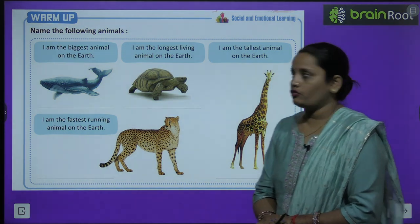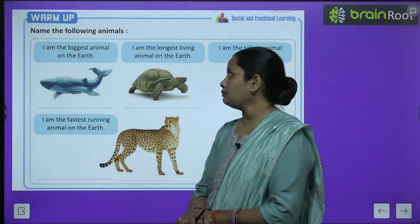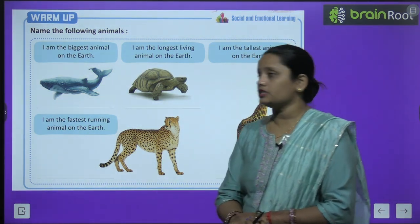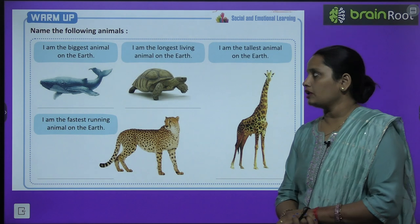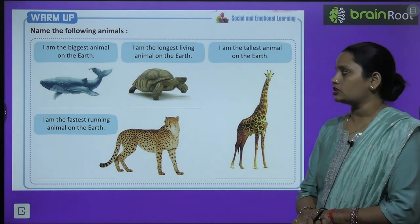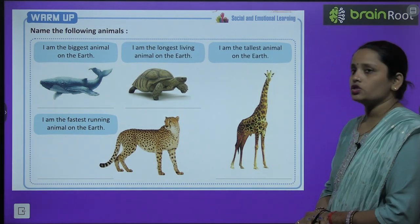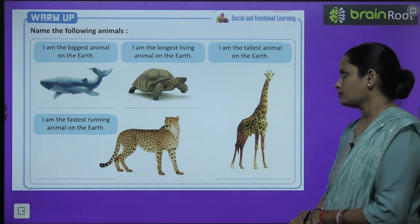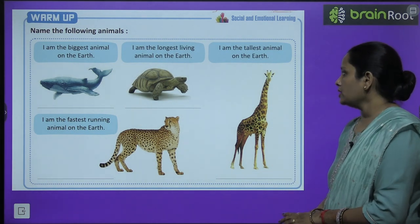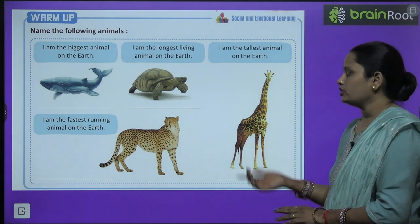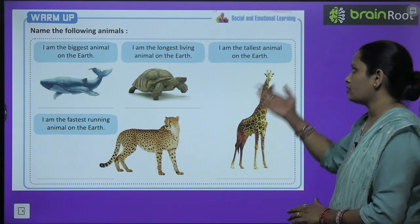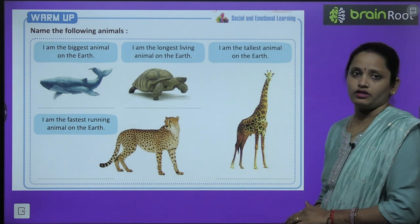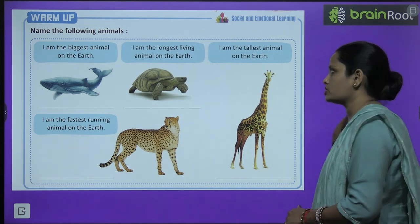Let's start with the warm up. Name the following animals. 'I am the biggest animal on the earth' — the answer is elephant. Similarly, name the rest of the animals after reading the given clues.